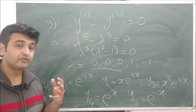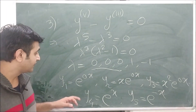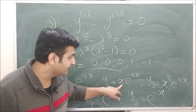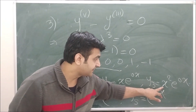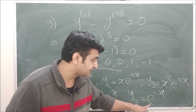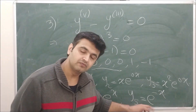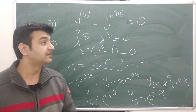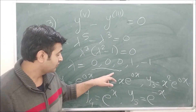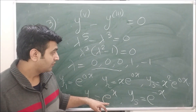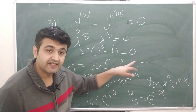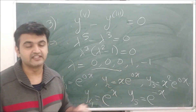Therefore the general solution is y = c₁ + c₂x + c₃x² + c₄e^x + c₅e^(−x). This is how you solve a differential equation when you have a mix of repeated roots and distinct roots.